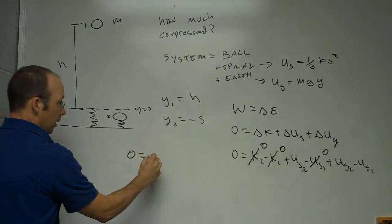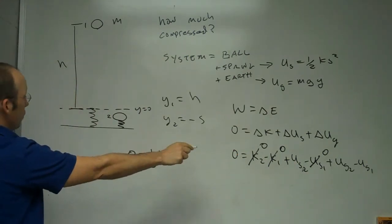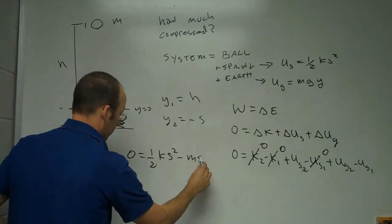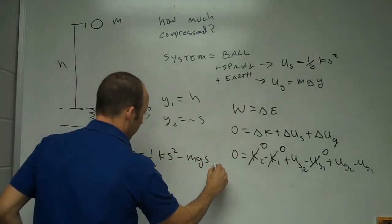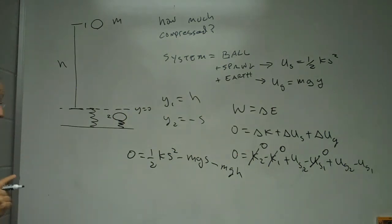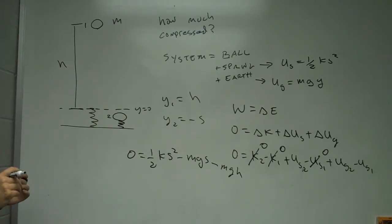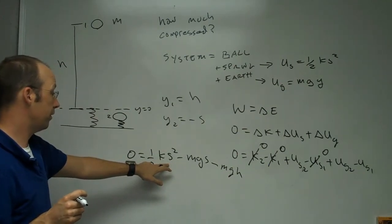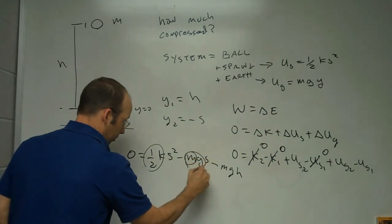So I have: zero equals Us2, which is one-half k s squared, plus Ug2, which is negative m g s, minus Ug1, which is negative m g h. I want to solve for s. This gives me a quadratic equation of the form zero equals a s squared plus b s plus c.